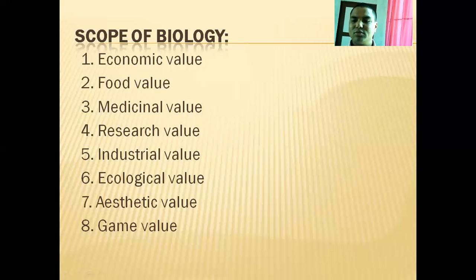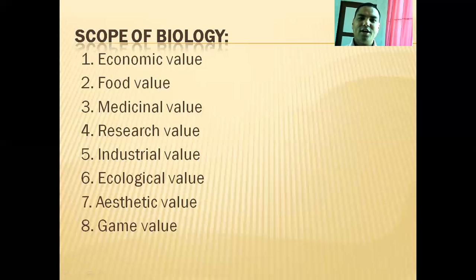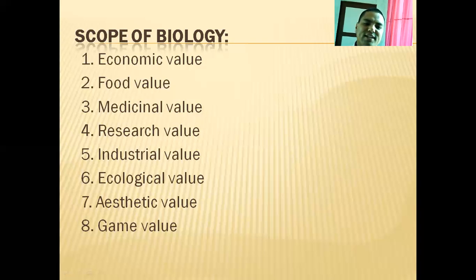Next is the industrial value. Without knowing biology, we cannot run different industries — like jute mills, sugarcane mills, sugar mills, and tobacco factories. And the next scope is the ecological value. If we are unable to know about ecology and balance the ecosystem, we cannot think about our life. Our life is totally dependent on ecological balance. That's why the next scope of biology is in the field of ecology.